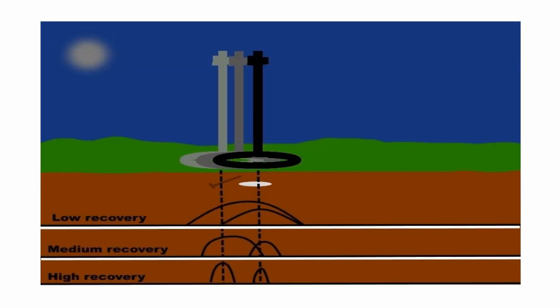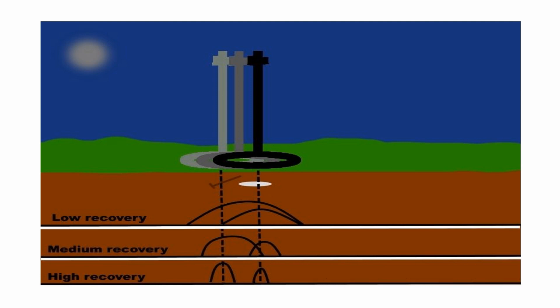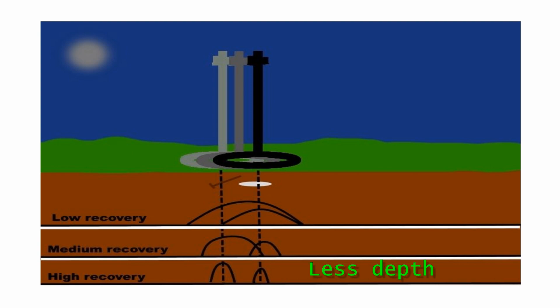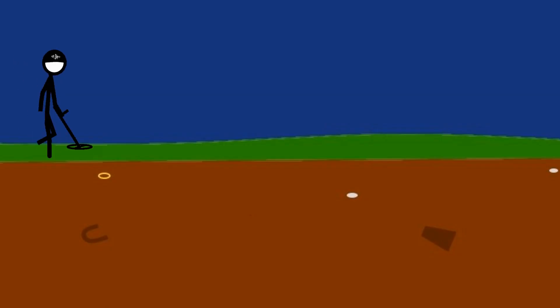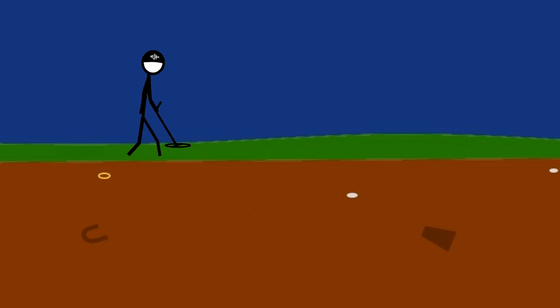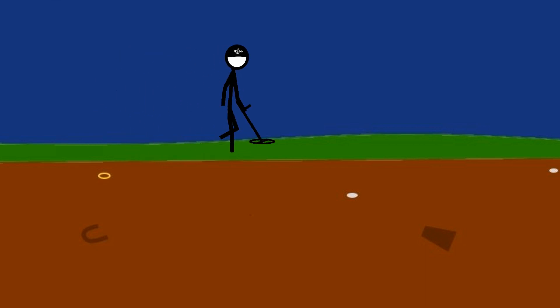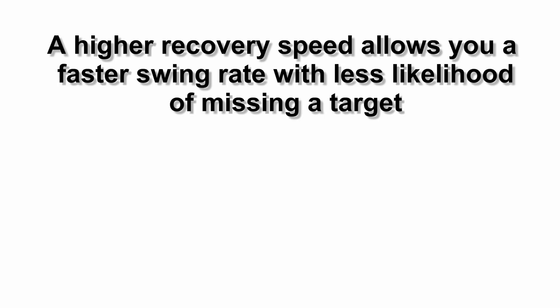Using a higher recovery speed may increase the ability for the detector to find more difficult targets. It also results in reduced target ID accuracy and less detection depth. A good general swing rate is two to three seconds to swing right to left and then back to right. A higher recovery speed allows you a faster swing rate with less likelihood of missing a target.